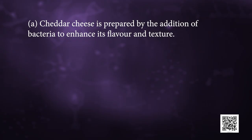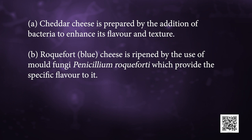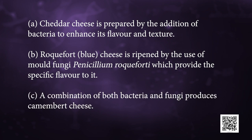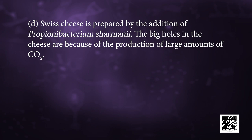Depending upon the nature of the organism added, cheese is of the following types: first is cheddar cheese, prepared by the addition of bacteria to enhance its flavour and texture. Second is Roquefort, known as blue cheese, ripened by the use of mould fungi Penicillium roqueforti which provides the specific flavour. Third is Camembert cheese, produced by a combination of both bacteria and fungi. Fourth is Swiss cheese, prepared by the addition of Propionibacterium shermanii. The big holes in Swiss cheese are because of the production of large amounts of CO2. The natural colour of cheese ranges from off-white to yellow, and herbs and spices may also be added.